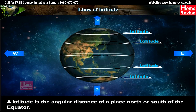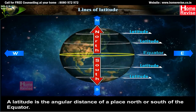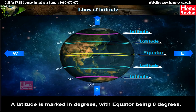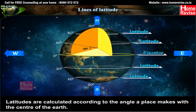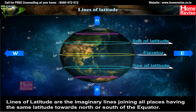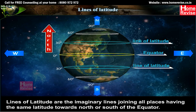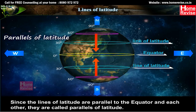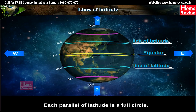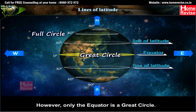Lines of Latitude: A latitude is the angular distance of a place north or south of the equator, marked in degrees, with the equator being zero degrees. Lines of latitude are imaginary lines joining all places having the same latitude towards north or south of the equator. Since these lines are parallel to the equator and to each other, they are called parallels of latitude. Each parallel of latitude is a full circle; however, only the equator is a great circle.